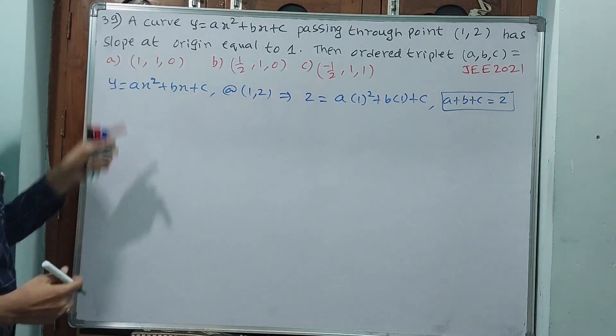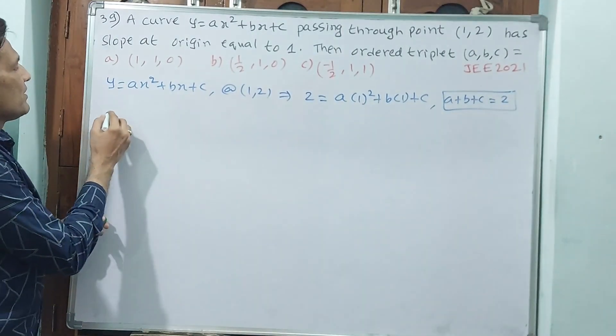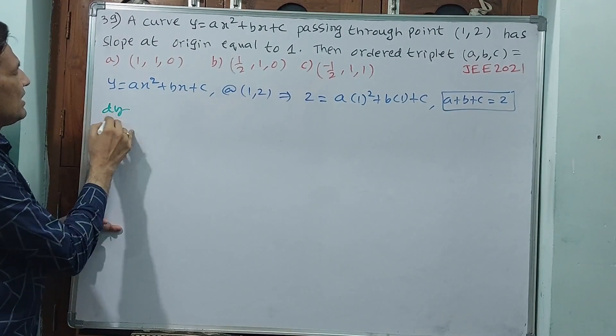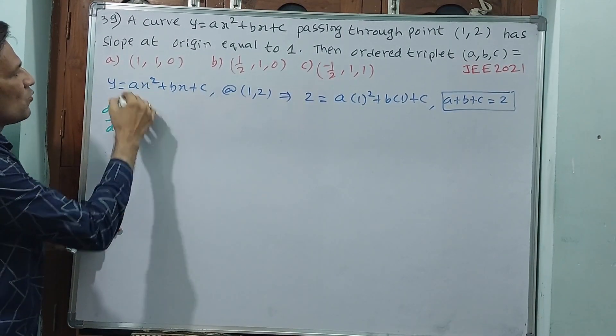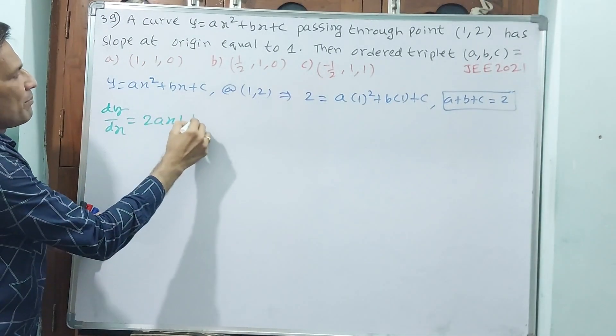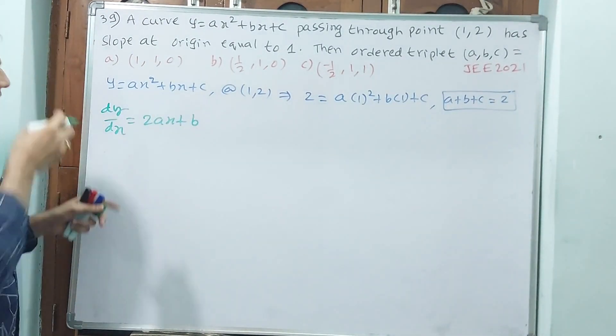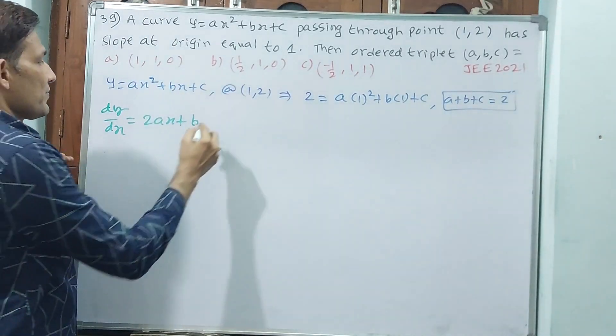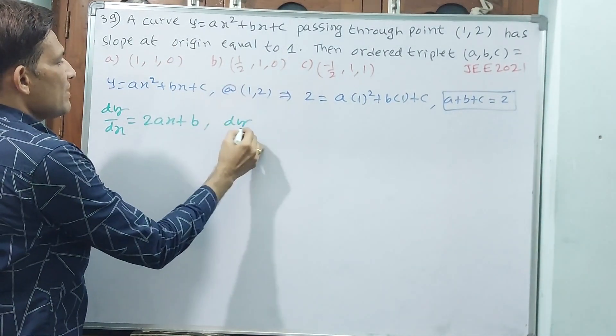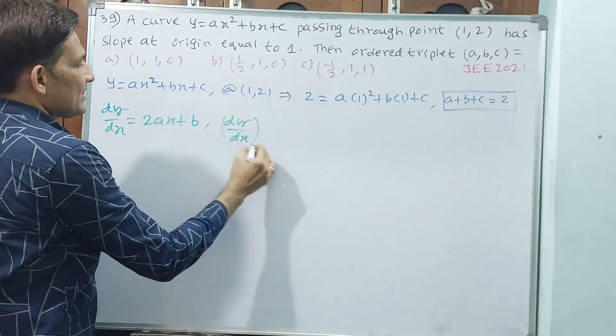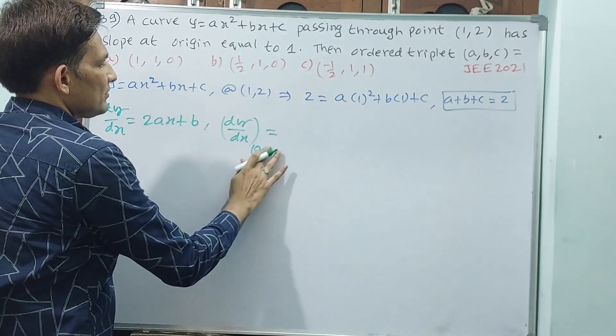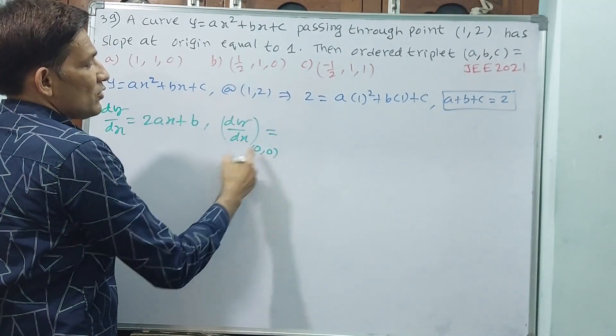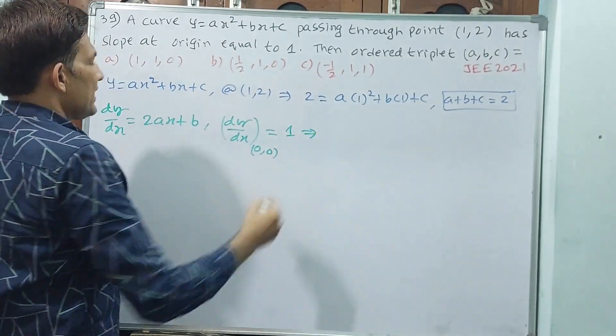Now go for slope. Slope we get by differentiation. That means dy/dx = 2ax + b. Slope at origin: dy/dx at (0,0), origin means (0,0), is equal to 1.